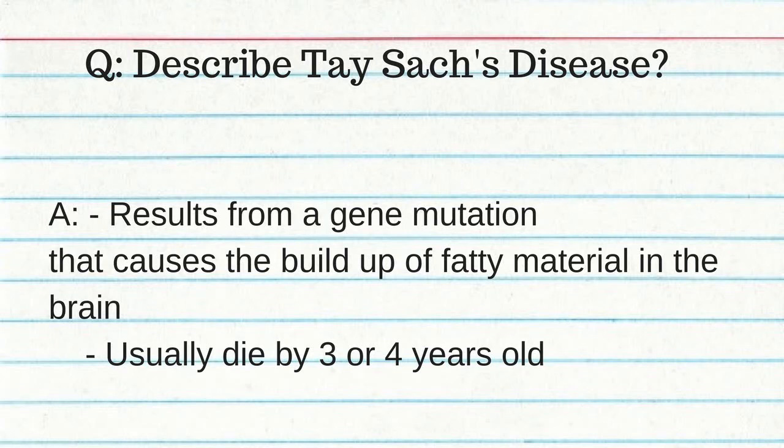Tay-Sachs disease results from a gene mutation that causes buildup of fatty material in the brain, and children usually die at about three or four years old. Humans usually have 46 chromosomes. Autosomes are chromosomes that are not sex chromosomes. A karyotype is a picture of a person's chromosomes arranged in homologous pairs according to size — it allows doctors to see any chromosomal mutations. Chromosomal mutations involve having too many or too few chromosomes, possibly caused by non-disjunction during meiosis, which means improper separation of chromosomes. Most non-disjunctions are fatal.